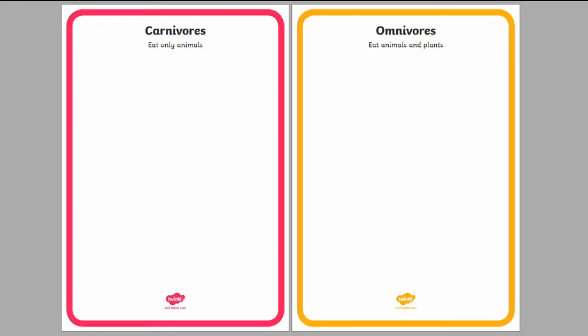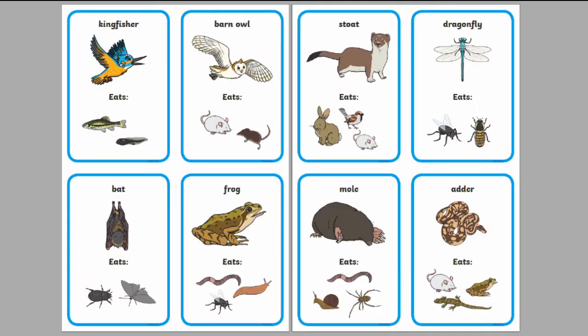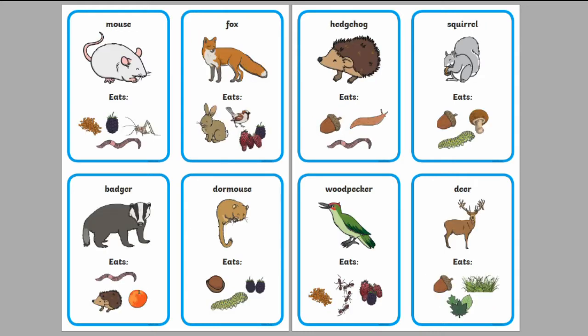So let's take a look at it now. There are three pages, one for each category, and then a selection of cards. Each of these cards has an image of an animal and what it needs, with both of these things labelled clearly.